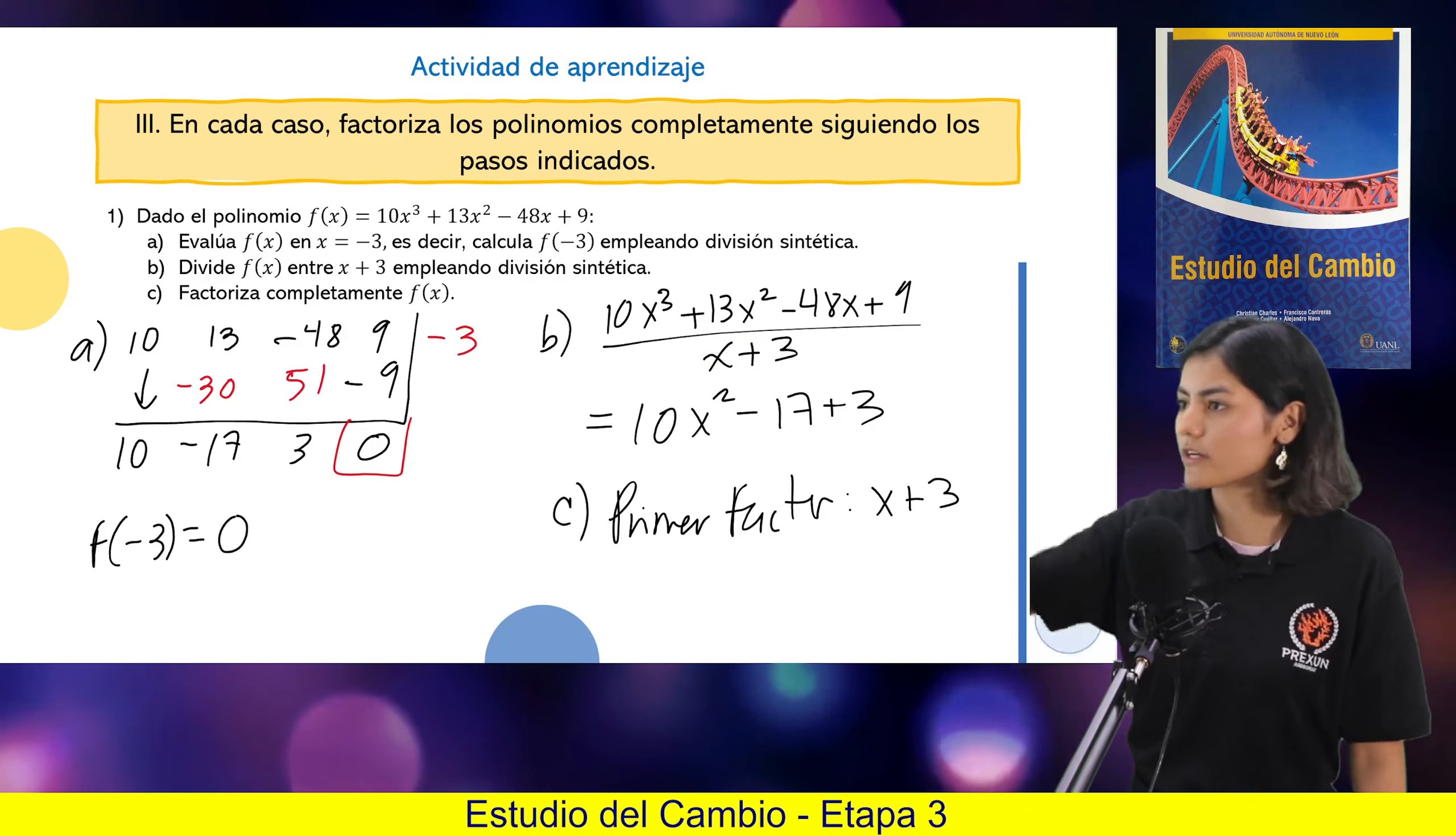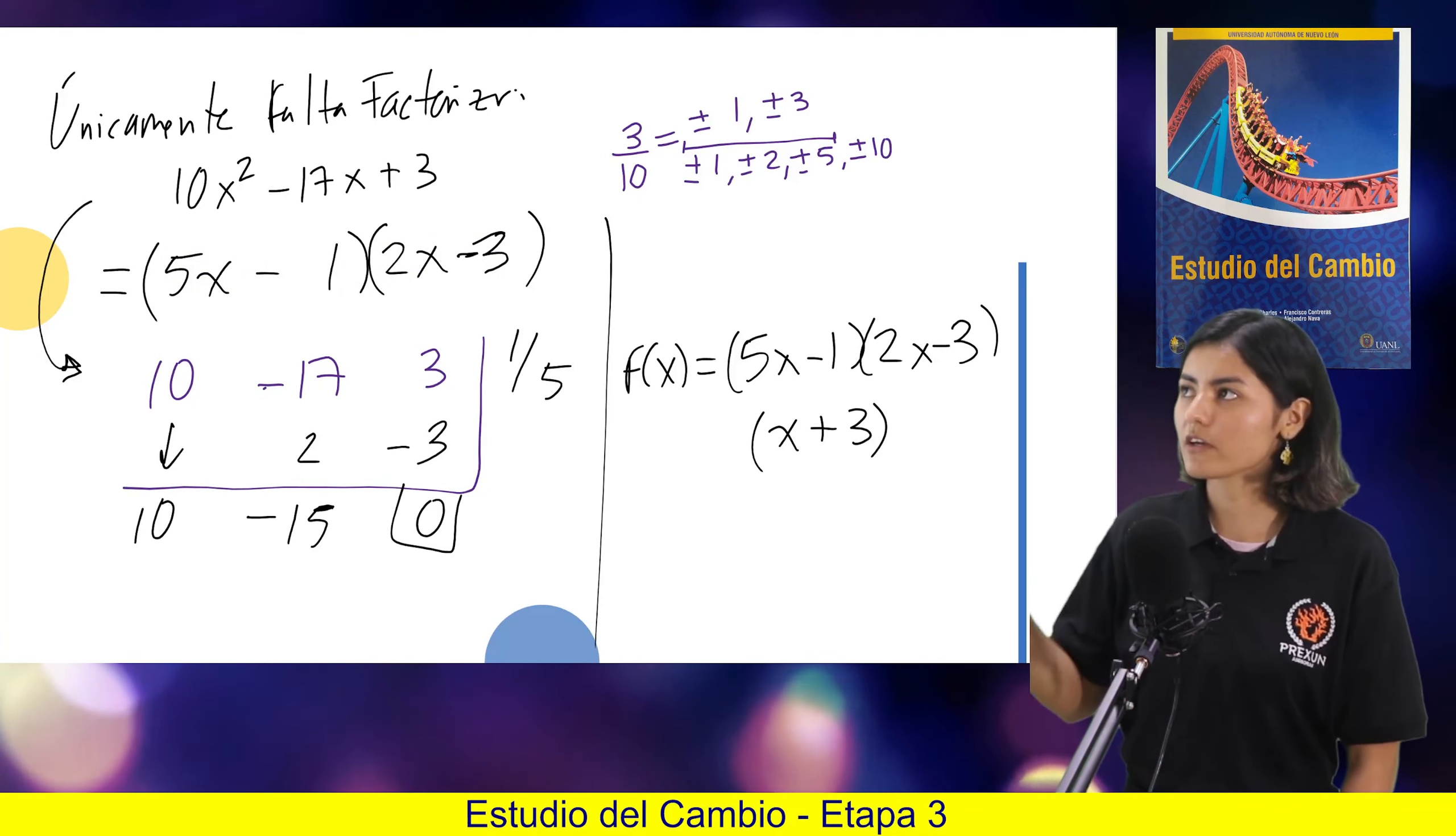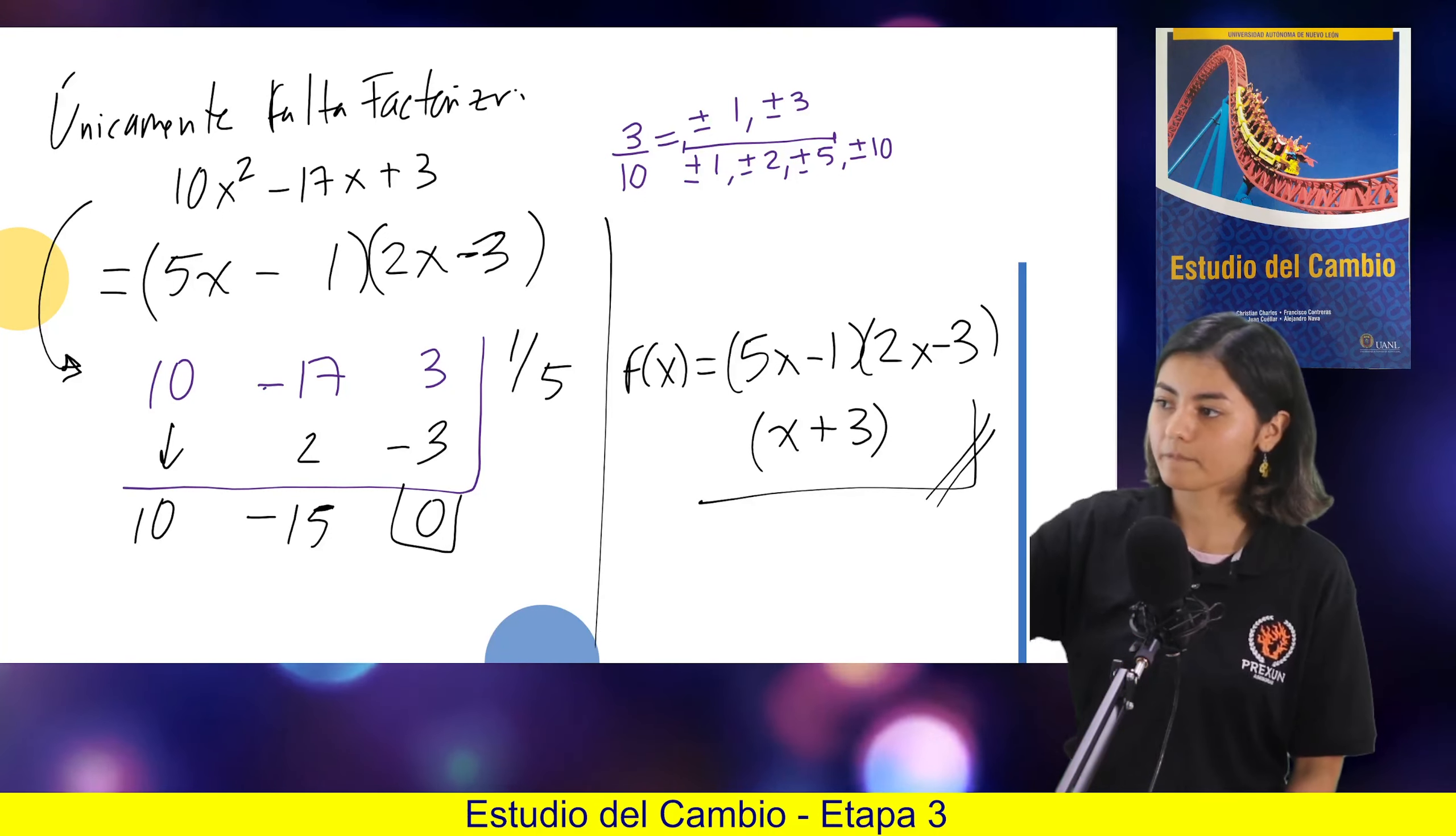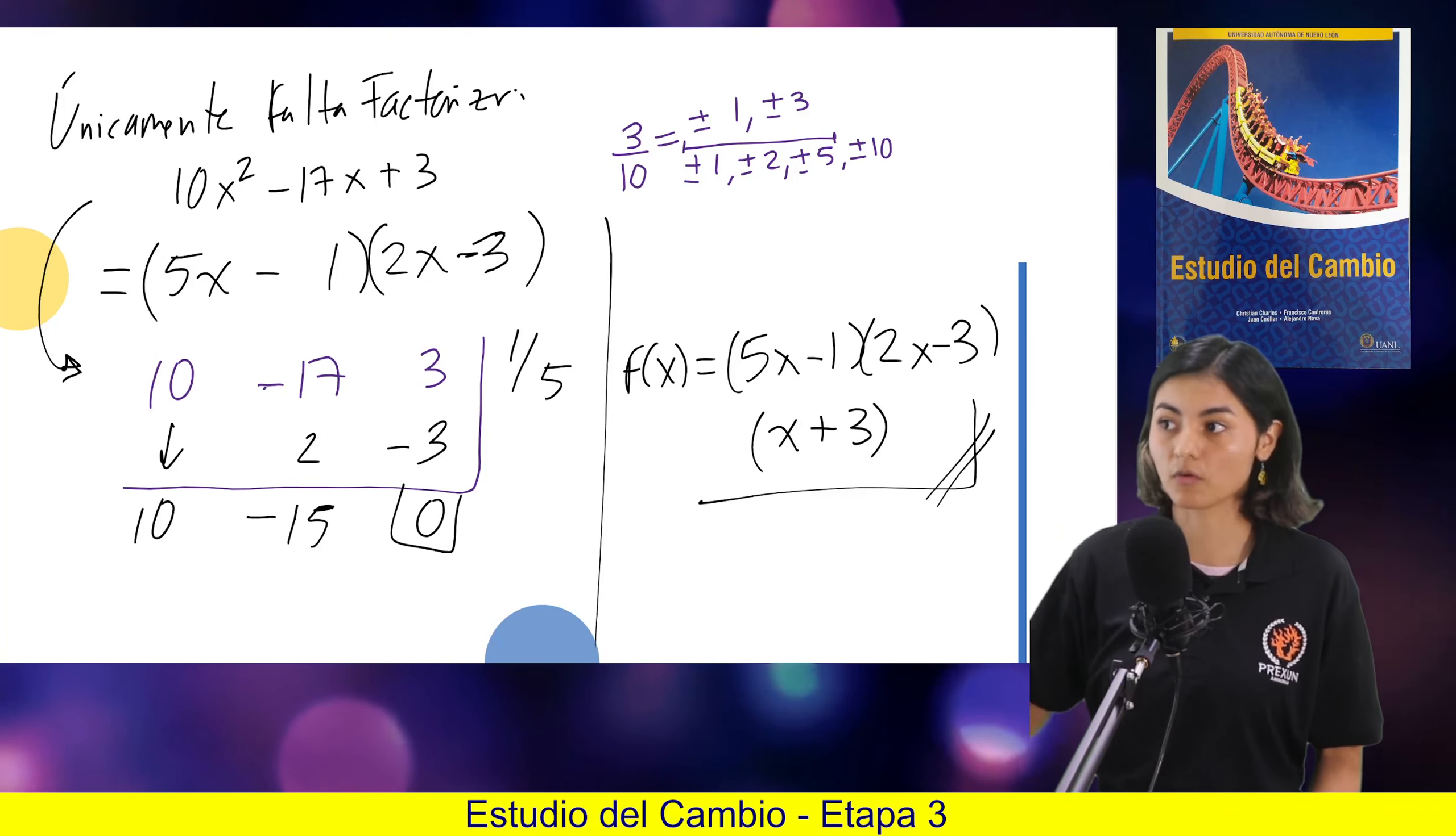Entonces, para eso sirve todo esto, para encontrar una factorización. El menos 3 fue raíz, el 1 quinto y el 3 medios. Entonces, el x más 3, el 5x menos 1 y el 2x menos 3 son factores. Esto vamos a estar haciendo en todos los ejercicios. Vamos a evaluar un punto, nos vamos a dar cuenta que va a ser una raíz sí o sí. Y después, el cociente lo vamos a factorizar para así poder tener la factorización completa.